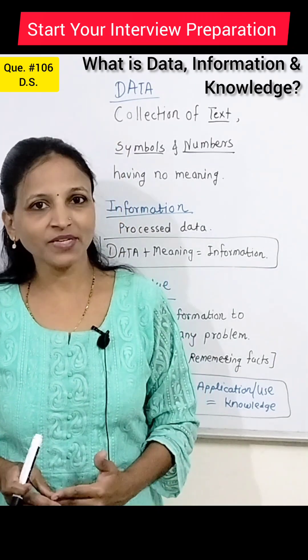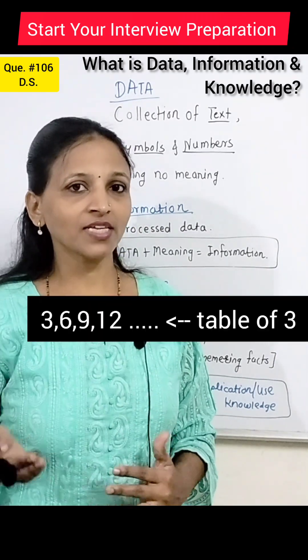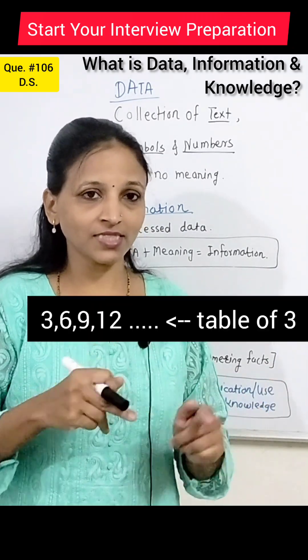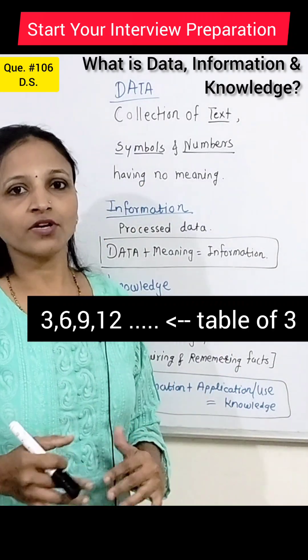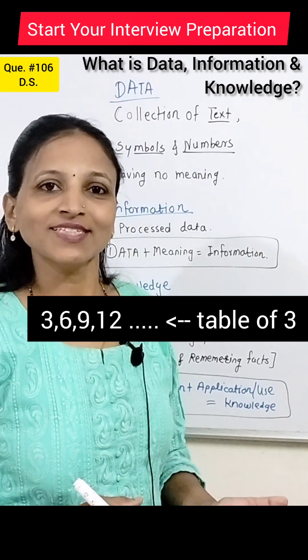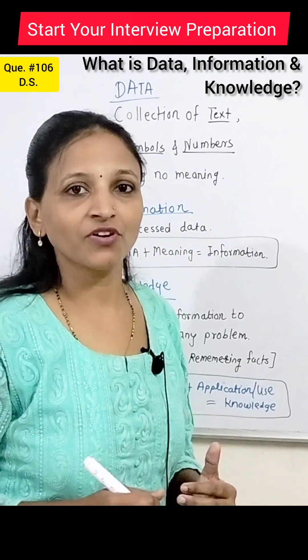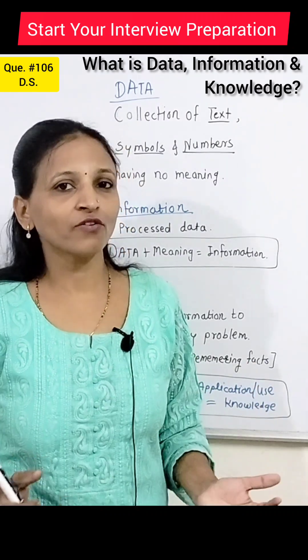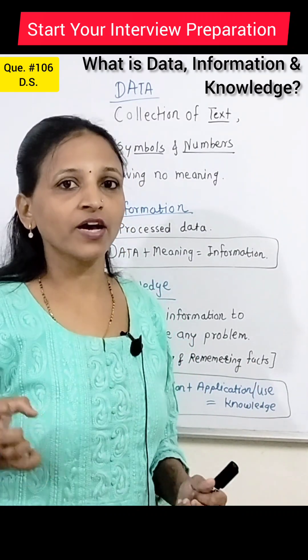If we give any meaning to the data, then that becomes information. For example, 3, 6, 9, 12 — these are the first four numbers from the 3 times table. Now it carries meaning, so it is information.